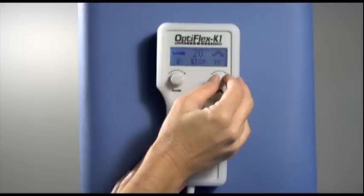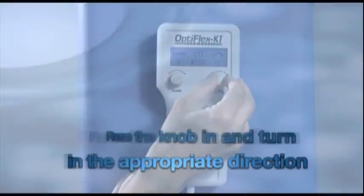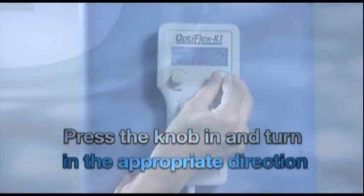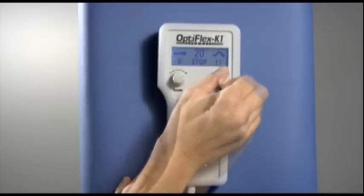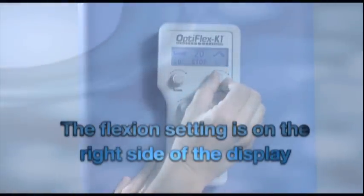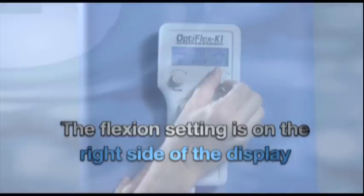To adjust the flexion limit to your prescribed or desired limits, use the flexion knob symbolized by the picture of a bent leg. Push the flexion knob in and turn in the appropriate direction. Note on the hand control that the flexion setting is on the right side of the display.